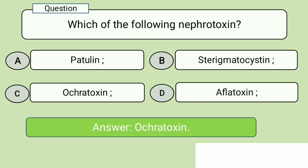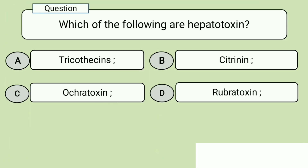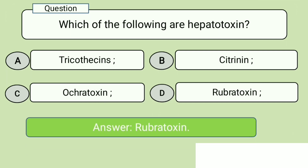Question 3. Which of the following is a hepatotoxin? A. Trichothecins, B. Citrinin, C. Ochratoxin, D. Rubratoxin. Answer: Rubratoxin.